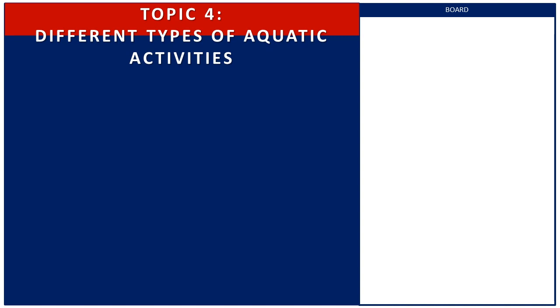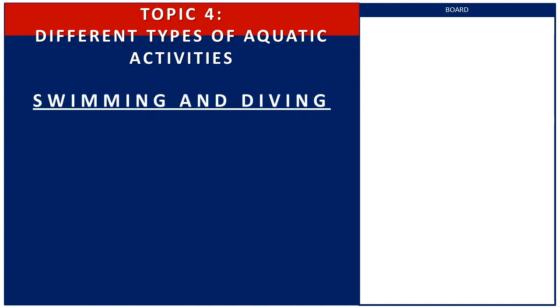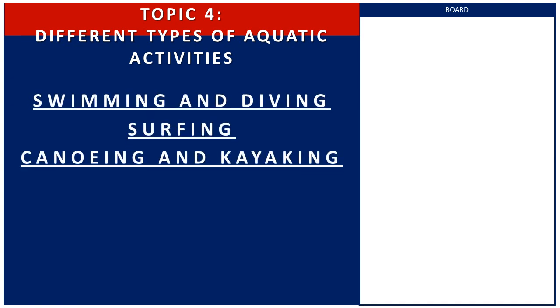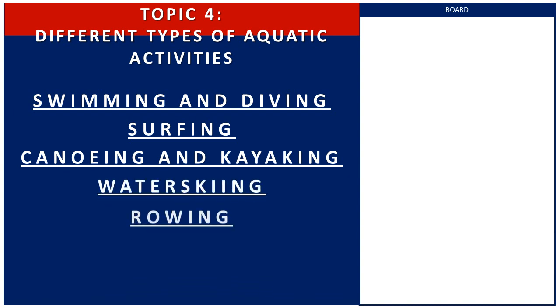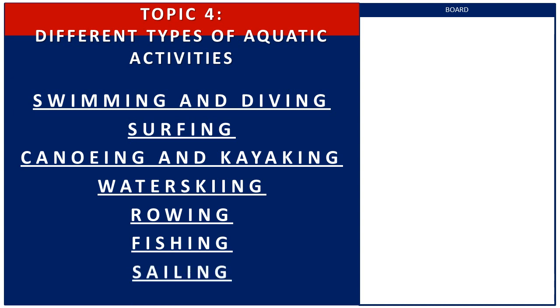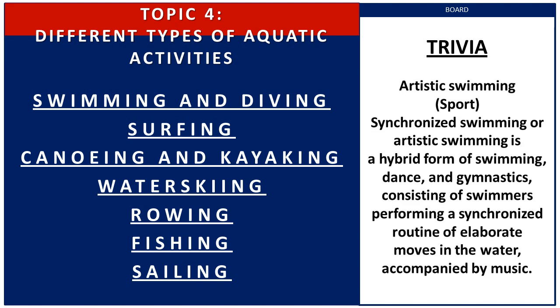Let us now move on to Topic 4: the different types of aquatic activities. We have swimming and diving, surfing, canoeing and kayaking, water skiing, rowing, fishing, and sailing. As a trivia, synchronized swimming — also called artistic swimming — is a hybrid form of swimming, dance, and gymnastics consisting of swimmers performing a synchronized routine of elaborate moves in the water accompanied by music.